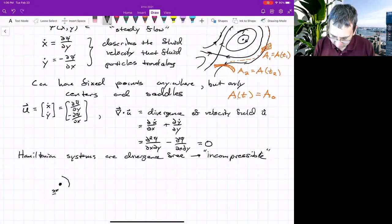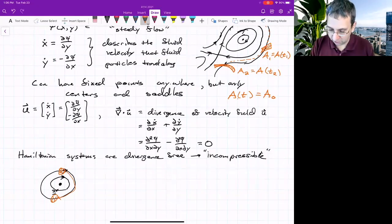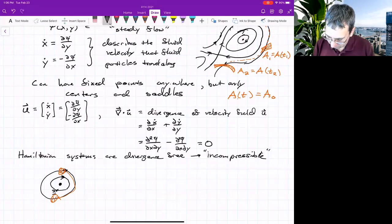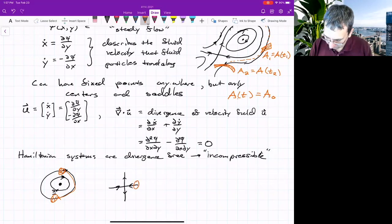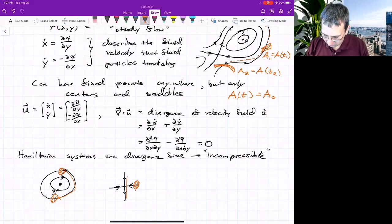and that means if you have a fixed point, let's call this x star, things are either just circulating around it, because you could have that and have the area maintained. So a blob will just sort of go around and remain a blob of the same area. Or you could have a saddle point, in which case if you have some blob that's initially on this stable eigen direction, it'll get stretched out.